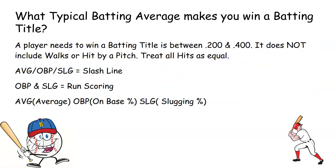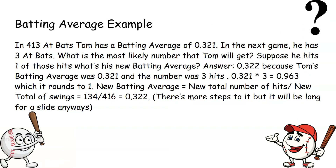Here's a batting average example: In 413 at-bats, Tom had a batting average of .321. In the next game, he had three at-bats. Suppose he gets one hit — what is his new batting average? The answer is .322.